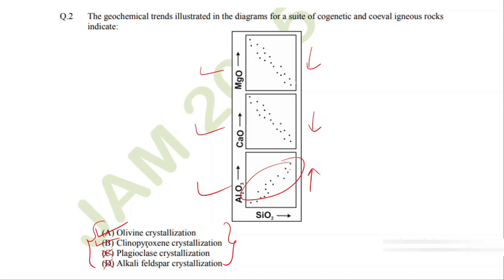Hence, not a single feldspar is crystallizing at this moment. Only olivine and clinopyroxene are crystallizing. Hence, the correct answer will be A and B. These types of questions you'll be able to answer if you know the trends and how to interpret them.